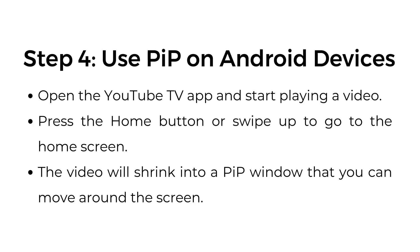Step number four: use PIP on Android devices. Open the YouTube TV app and start playing a video. Press the home button or swipe up to go to the home screen. The video will shrink into a PIP window that you can move around the screen.